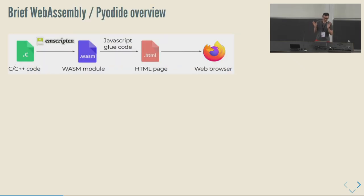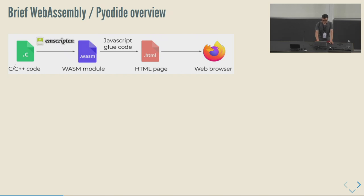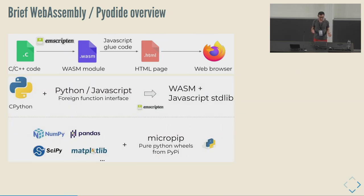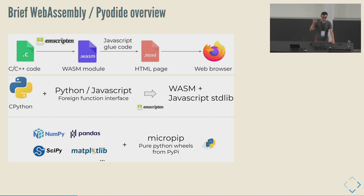Super brief WebAssembly/Pyodide overview: you have some C++ code, you compile it with Emscripten, it gives you a Wasm or WebAssembly module, and then the browser or other runtimes like Node.js know how to run it. CPython is written in C, so you can use this toolchain to have Python inside the browser. Pyodide also provides other scientific packages with compiled code — C or Fortran in the SciPy case — and you can install pure Python wheels from PyPI.